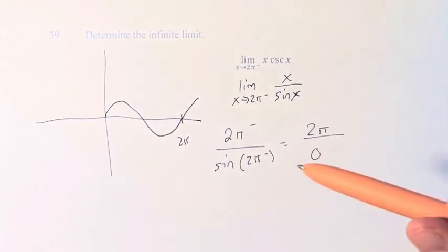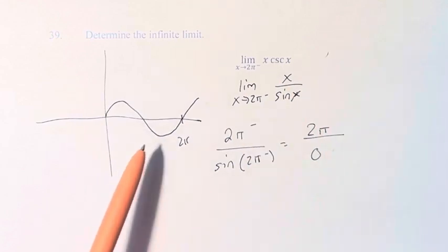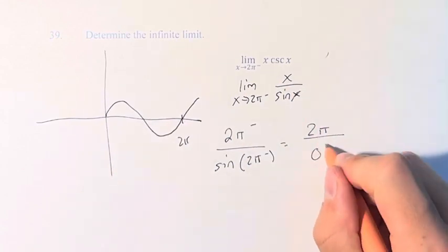However, we can't just divide by 0, so we have to say where we're coming from. If we're coming from the left, we're coming from the negative numbers, meaning we're approaching 0 from the left.